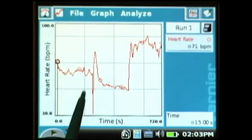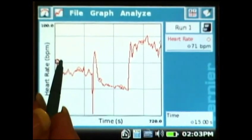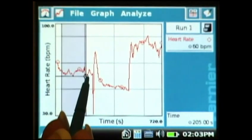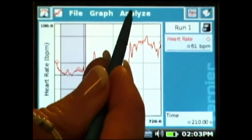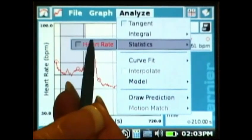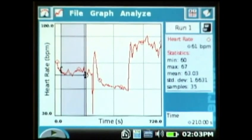We can actually look at the average heart rate for each of these three and you would do that one at a time. Take your stylus and select a region where he was sitting in the chair. Under analyze choose statistics for heart rate and you see that the mean heart rate is 63 beats per minute for that first section in the chair.